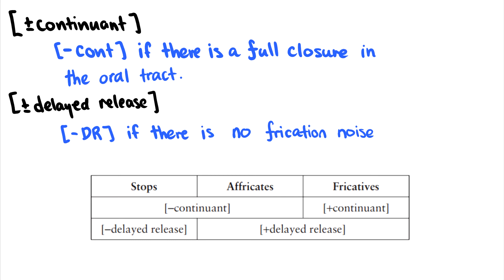Plus or minus delayed release — it's minus delayed release if there's no frication noise. Think of stops: /p/, /b/ — there's not a single moment of continuous airflow, no tightly constricted sound. But in /ʃ/, there's frication. And in /tʃ/ the affricate, we can hear that frication — there's a reason /tʃ/ is spelled with a stop and a fricative linked together. When there is a delayed release, there is essentially a delayed release of that frication sound — not just an immediate release, but some delayed release which causes frication. So if I want to talk about stops, I use minus continuant minus delayed release. If I want to talk about affricates, I use minus continuant plus delayed release.